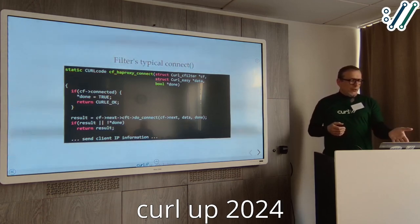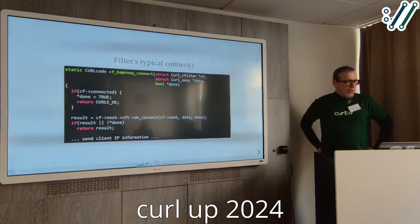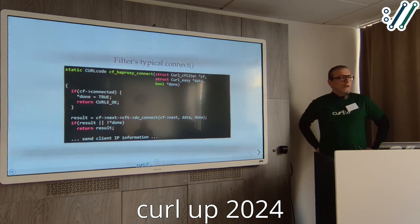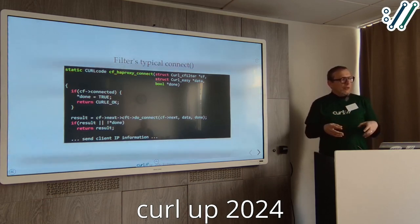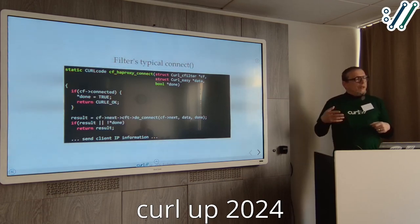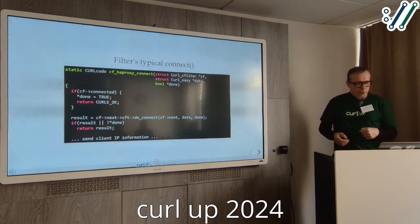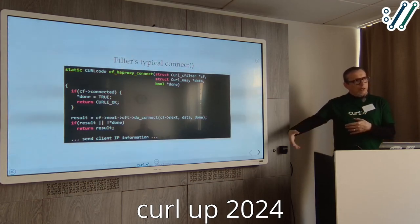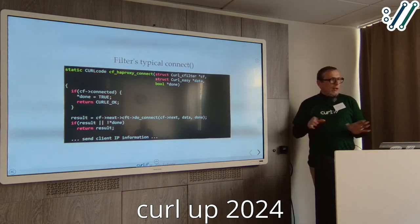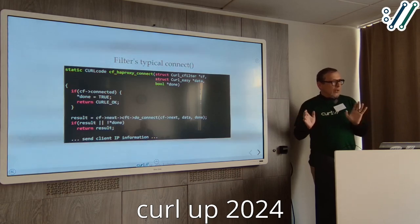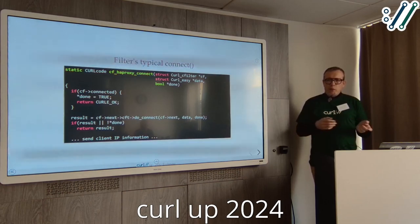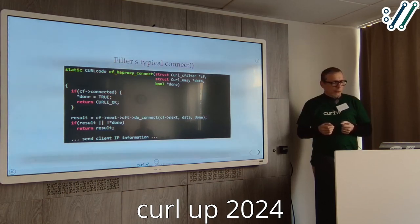Here's an example from the HA proxy filter implementation. HA proxy is a protocol that initially sends the client IP address to the server before doing anything else, so the server knows who it's talking to. In the connect phase, it waits for all its underlying filters to be connected, then sends the HA proxy protocol information, and then it's done. It just passes on all send-receive data unchanged because it's not involved in the traffic.